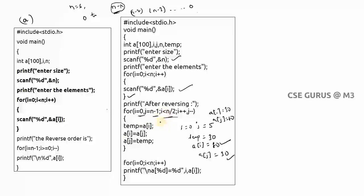After performing the swaps, when you print the array it will display elements in reverse order. The key difference: in printing reverse order, the array stays unchanged and you just print differently. In reversing the elements, the array itself is modified, so printing it normally gives the reversed result.